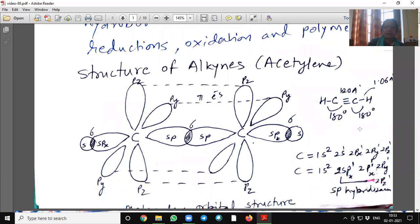Alkynes, in alkynes, carbon having sp hybridization. See here, the configuration of carbon and bond angle is 180 degrees. Bond length of carbon-carbon is 1.20 angstrom and carbon-hydrogen is 1.06. It is lower than compared to alkanes and alkenes.